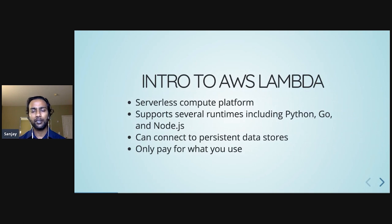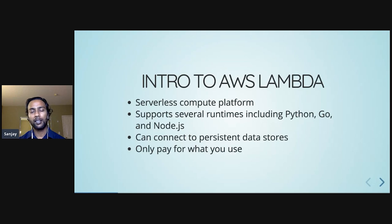I want to focus on one serverless offering in particular called AWS Lambda. Lambda is Amazon's serverless compute platform. It supports several runtimes out of the box, including Python, but also others like Go and Node.js. In Lambda, you write what's called a function, and your Lambda function can connect to persistent data stores such as a database, an S3 bucket, or a shared file system. One nice feature is that you only pay for the compute time that you use, down to the millisecond.